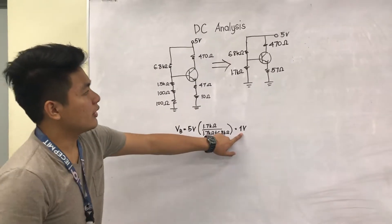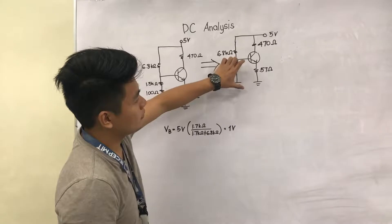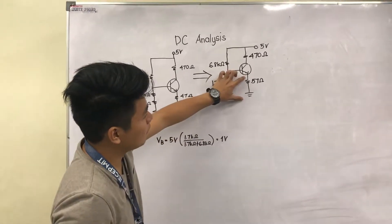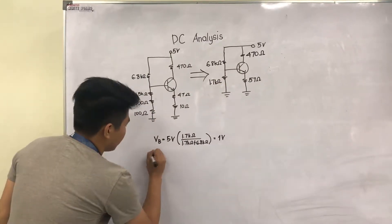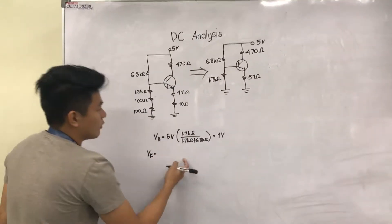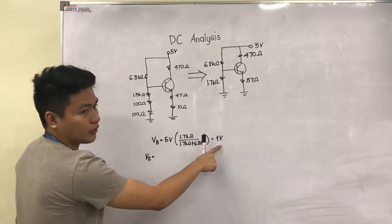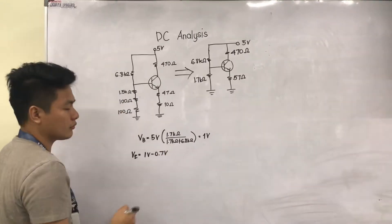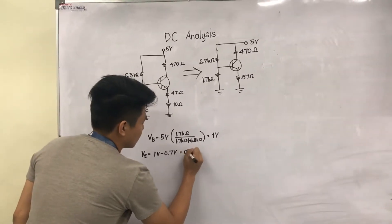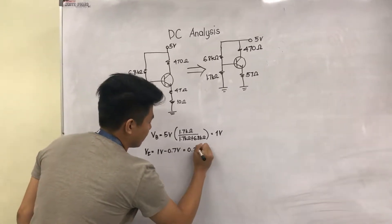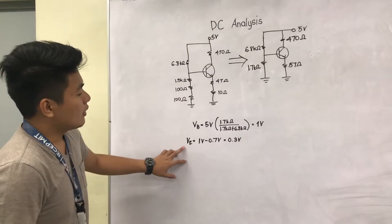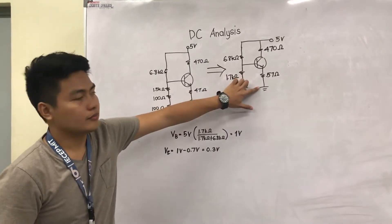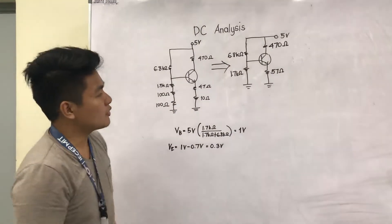This 1 volt is the base voltage with respect to the ground. Now, to find the emitter voltage VE, we must subtract 0.7 from 1 volt. 1 volt minus 0.7 volt equals 0.3 volt. Now, in finding the emitter current, we must use Ohm's law.